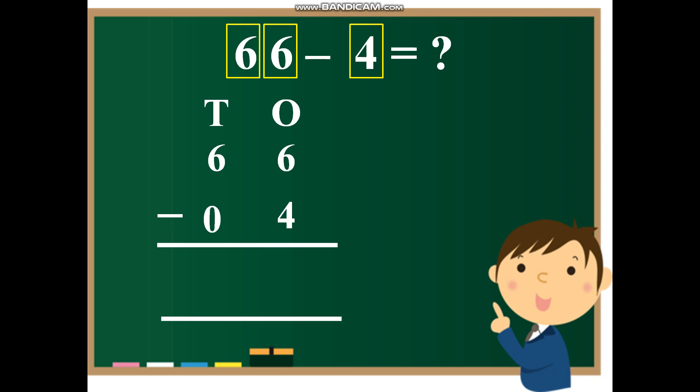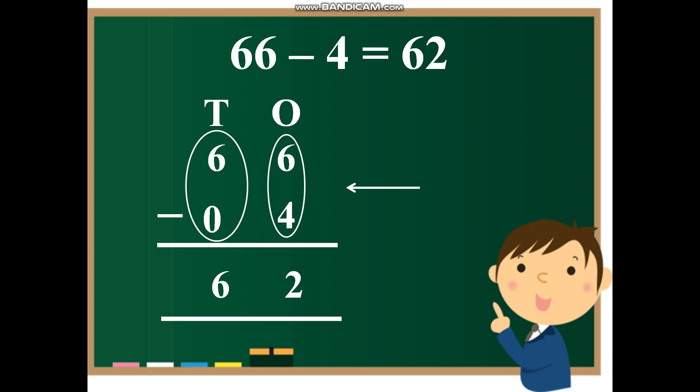Now let us start subtracting. It will start from yes, right side. So six minus four will give me two. And six minus zero will give me six. So my answer is 66 minus 4 is equal to 62.